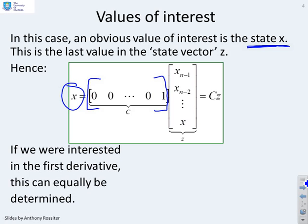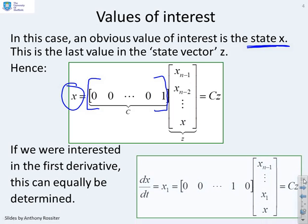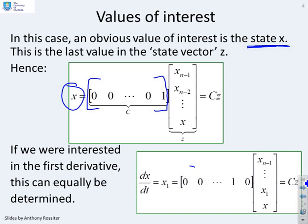Now if I were interested in the first derivative, which was the state x_1, then I could use a different choice of C. Here you can see C is all zeros apart from a one in the penultimate column. And clearly when I multiply z by this C, this will extract just x_1. So the key point here is when I know what my values of interest are, I can define an appropriate C.